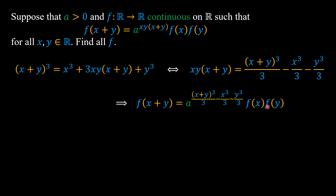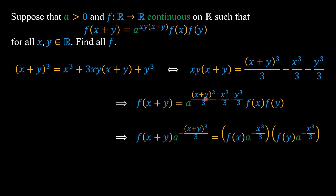We then group a to the power of (x+y)³ over 3 with f(x+y), group a to the power of minus x³ over 3 with f(x), and lastly group a to the power of minus y³ over 3 with f(y), giving us this new form of the functional equation.